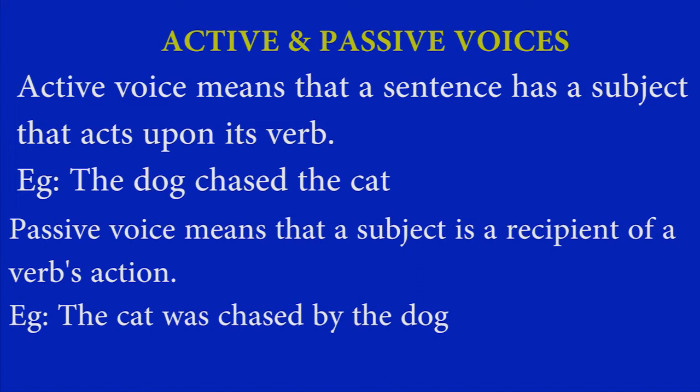Active voice means a sentence has a subject that acts upon its verb. For example: the dog chased the cat. The dog is the subject, chased is the verb, and the cat is the object. The dog, that is the subject, is doing an action on the object, that is the cat.